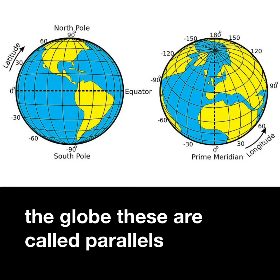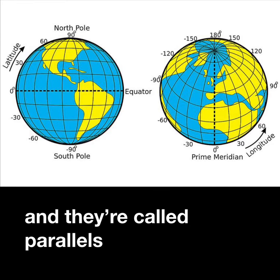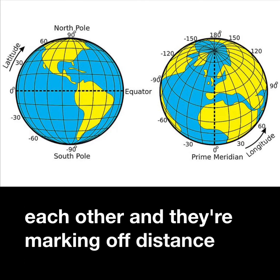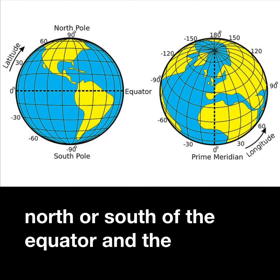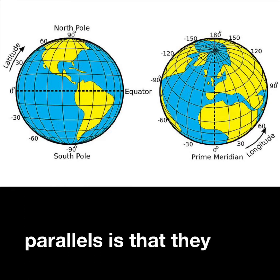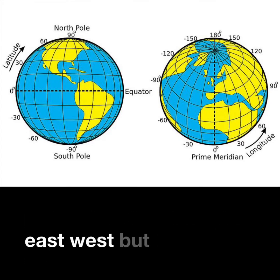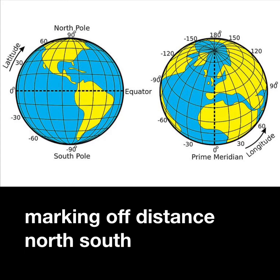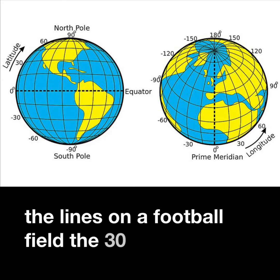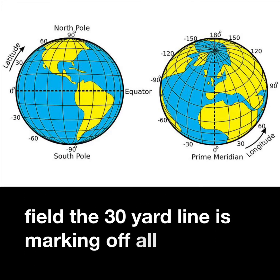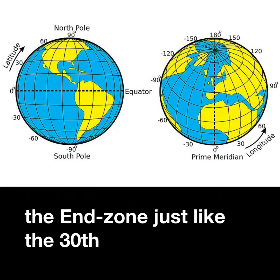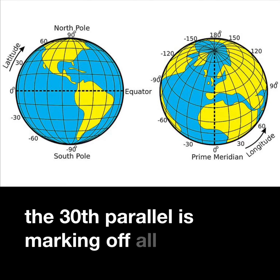These lines are called parallels, and they're called parallels because they run parallel to each other. They mark off distance north or south of the equator. The confusing thing is that parallels run east-west but they're marking off distance north-south — kind of like the lines on a football field, where the 30-yard line marks off all the points that are 30 yards from the end zone.